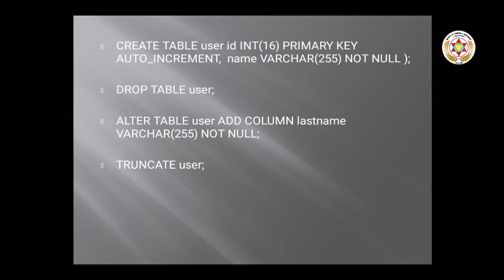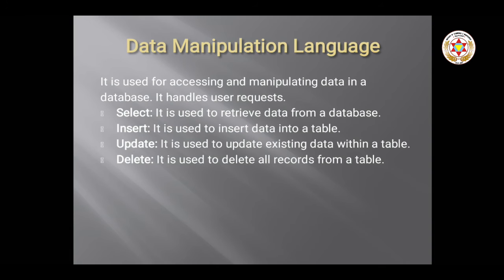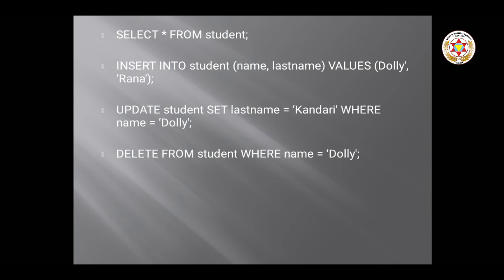The difference: TRUNCATE deletes all rows at once, while DELETE can delete one or more specific rows. The SELECT syntax is: SELECT followed by the column name, then FROM and the table name — for example, SELECT * FROM student, where * means select all columns. If you only want the id column, write SELECT id FROM student.